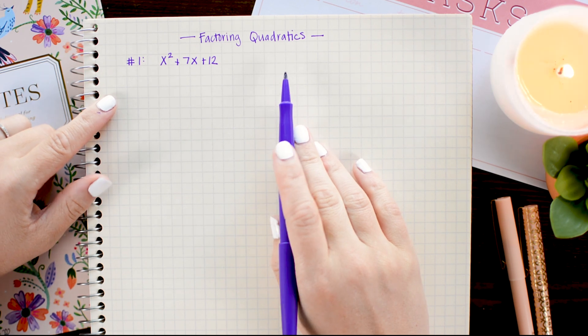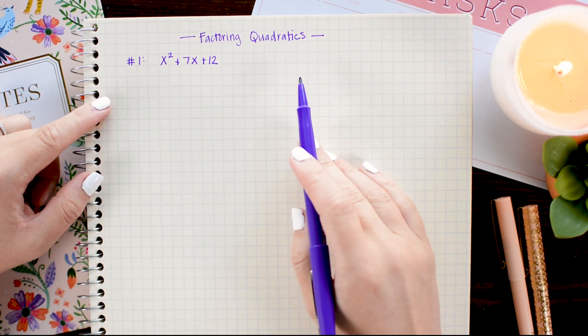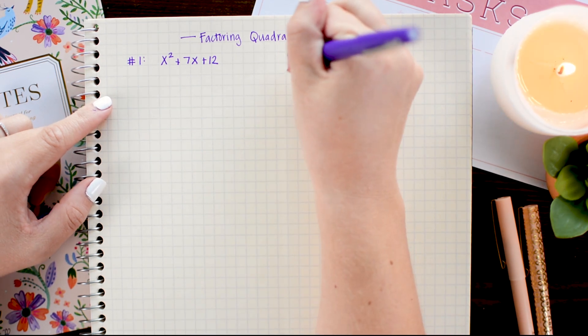Factoring quadratics is the exact reverse of multiplying binomials. So let's just do a quick recap on multiplying binomials.